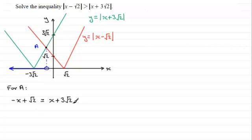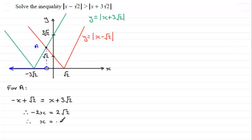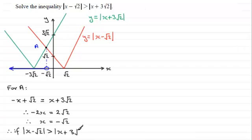Now we just solve for x. Subtracting x from both sides gives minus 2x, and subtracting root 2 from both sides gives 3 root 2 minus root 2 which is 2 root 2. Dividing both sides by minus 2, we get x equals minus root 2. Therefore, if the mod of x minus root 2 is to be greater than the mod of x plus 3 root 2, it follows that x must be less than minus root 2.